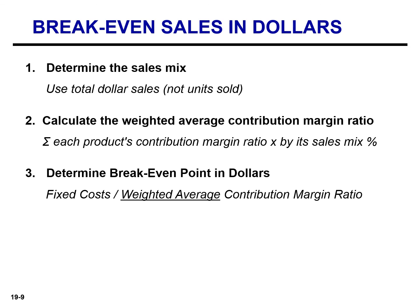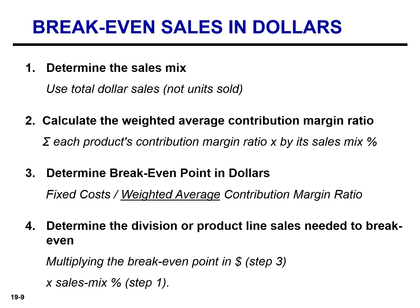Once we have the weighted average contribution margin ratio, we determine the break-even point in dollars by dividing that ratio into fixed costs. The last step is to determine the division or product line sales needed to break even by multiplying the break-even point in dollars by the sales mix percentage for each division or product line, which gives the amount of sales that need to be generated for each division or product line in order to break even.